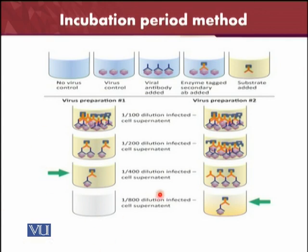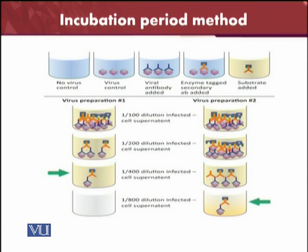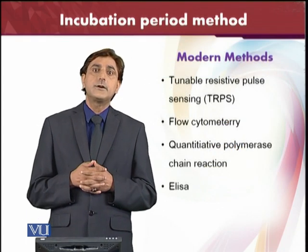At the 1-in-400 dilution, you can see that in virus preparation 1 there are antibodies present with enzymes tagged to the antibody, and the virus with antibodies. However, at 1-in-800 dilution these are absent. In virus preparation 2, both are still present at 1-in-800 dilutions. These are the traditional methods for viral titration to investigate which kind of viruses are present and to measure virus concentration in samples.